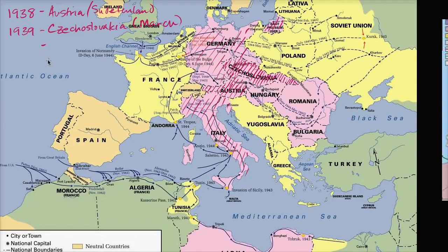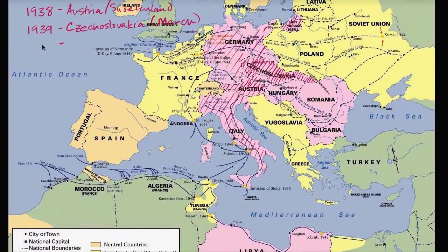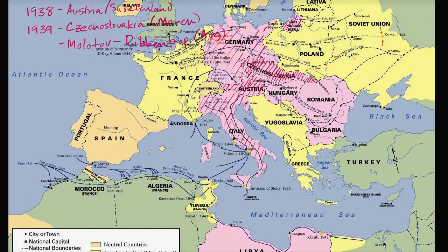Then in August, in preparation for the all-out war that's about to happen, the Germans don't want to fight the Soviets right out of the gate. So in 1939, they sign the Molotov-Ribbentrop Pact with the Soviet Union — essentially a mutual non-aggression agreement. They secretly agree to create spheres of influence: Germany can take control of part of Eastern Europe, and Stalin's Soviet Union can take over other parts.